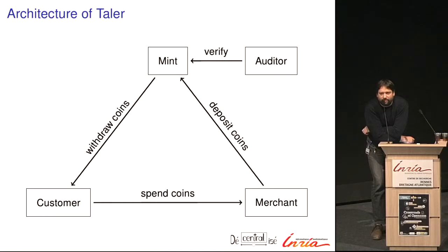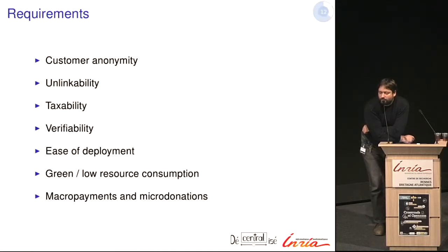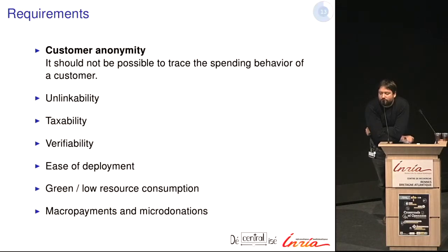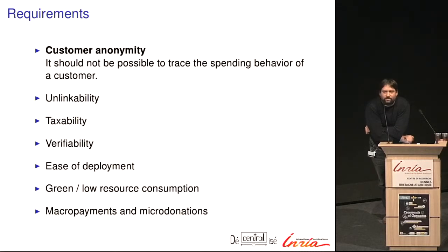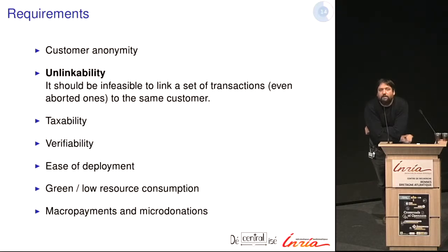Our basic requirements: first, customer anonymity — it should not be possible to trace the spending behavior of a customer. You should not be able to tell how I use my money. When the government can check on you everywhere, it creates problems — businesses can do dynamic pricing adjusted to your behavior, or sell that information to an insurance company. Anonymity should be highly valued. Second is unlinkability — this is where our technical innovation lies.